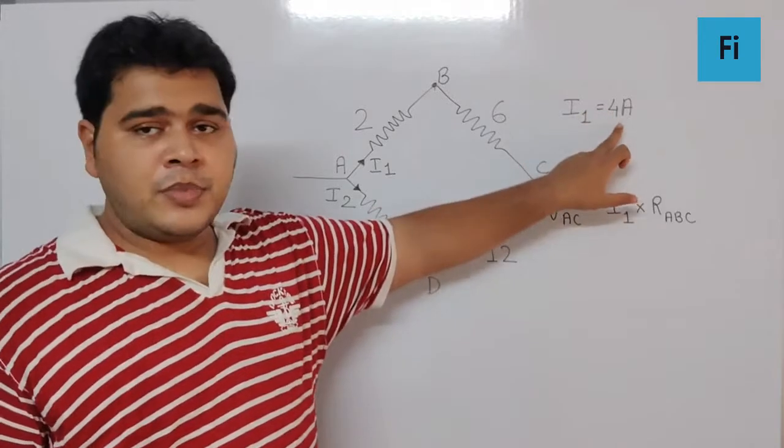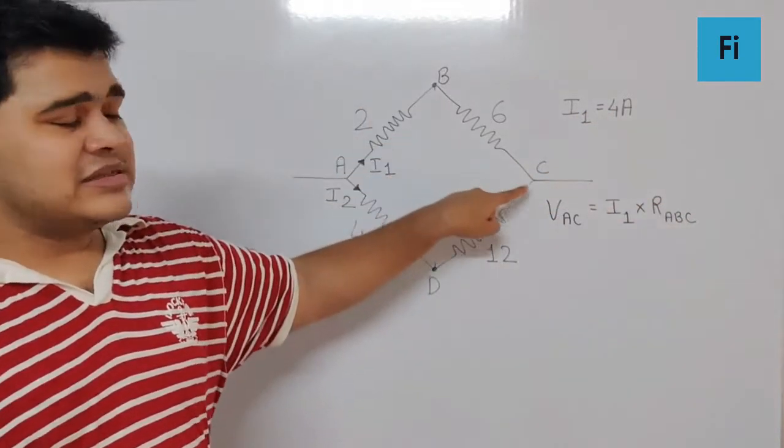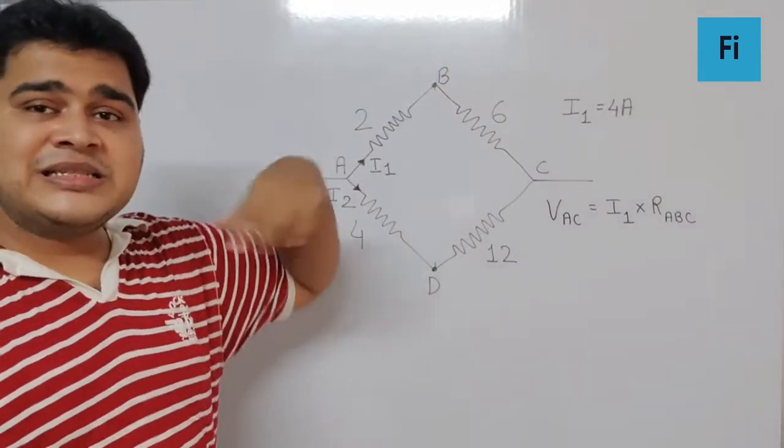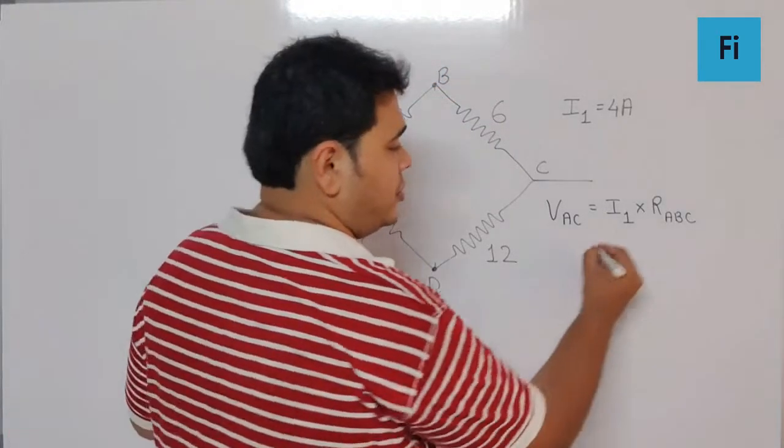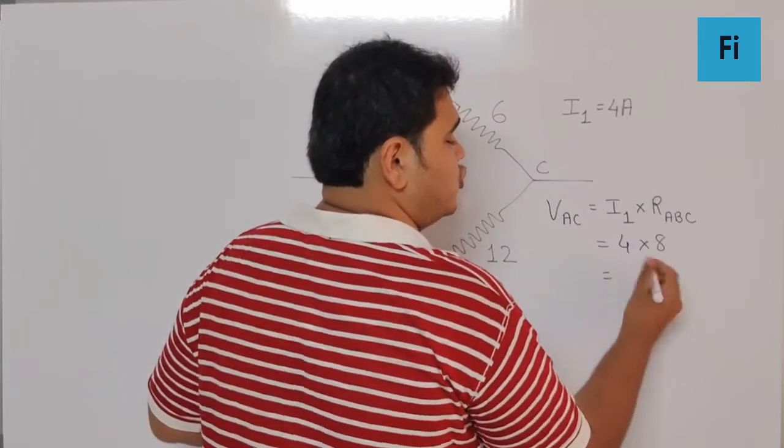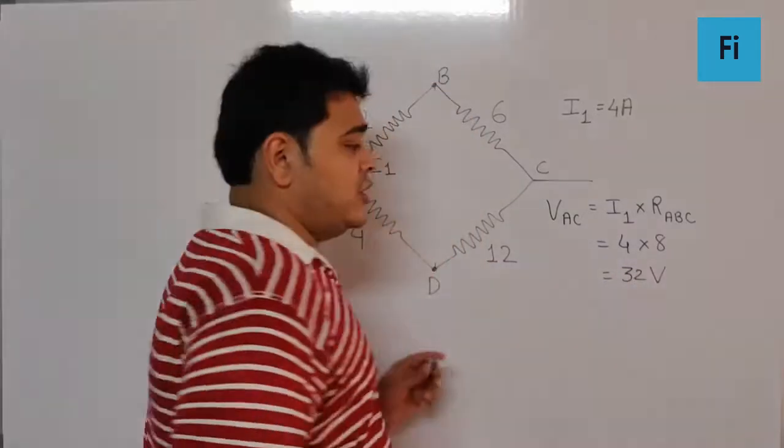it's 4 amperes, and R_ABC, that is the equivalent resistance between A, B, and C, as 2 and 6 in series will give you 8 ohm. So 4 into 8, that is 32 volts. And we...